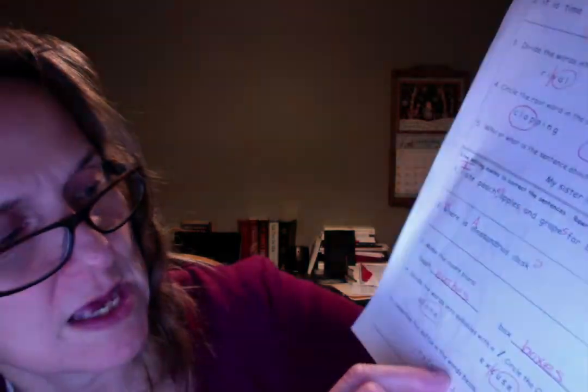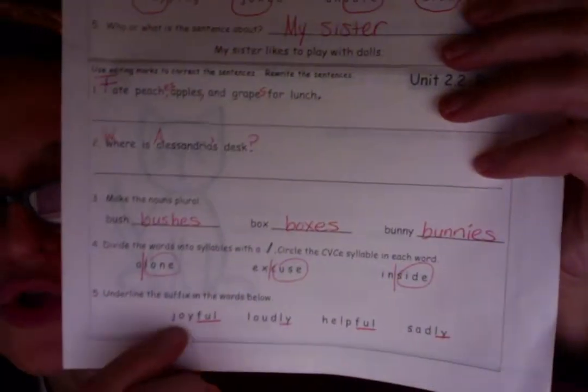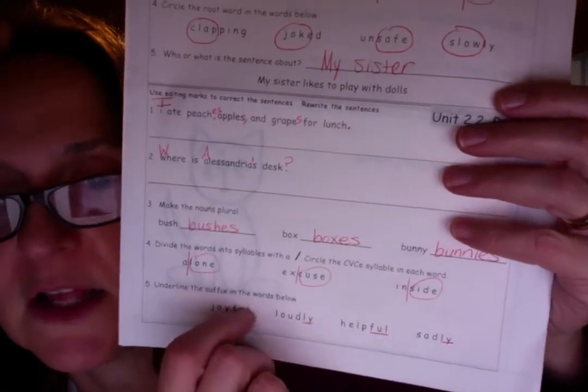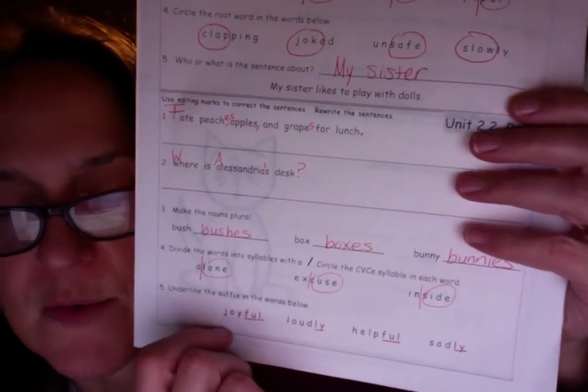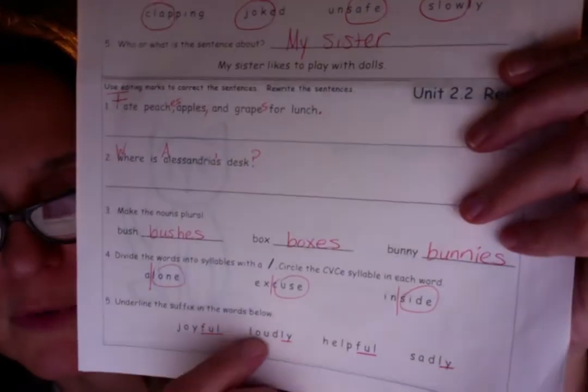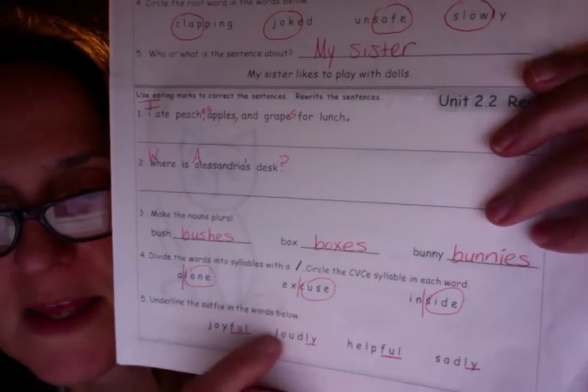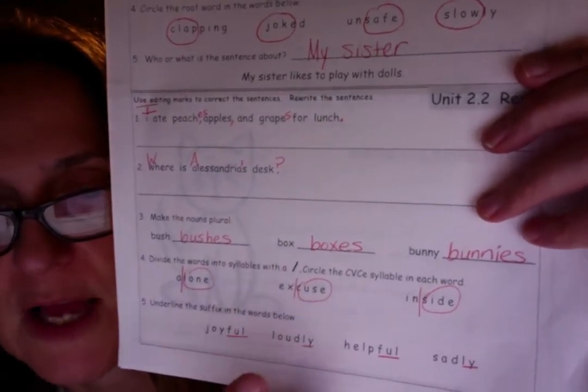Underline the suffix in the words below. Joy is your root word. Full is your suffix. Full of joy. That's what that means, right? So we should have underlined the suffix F-U-L. Loudly. The root word is loud. Lee is your suffix. It means in a way that is loud. So you should have underlined L-Y.